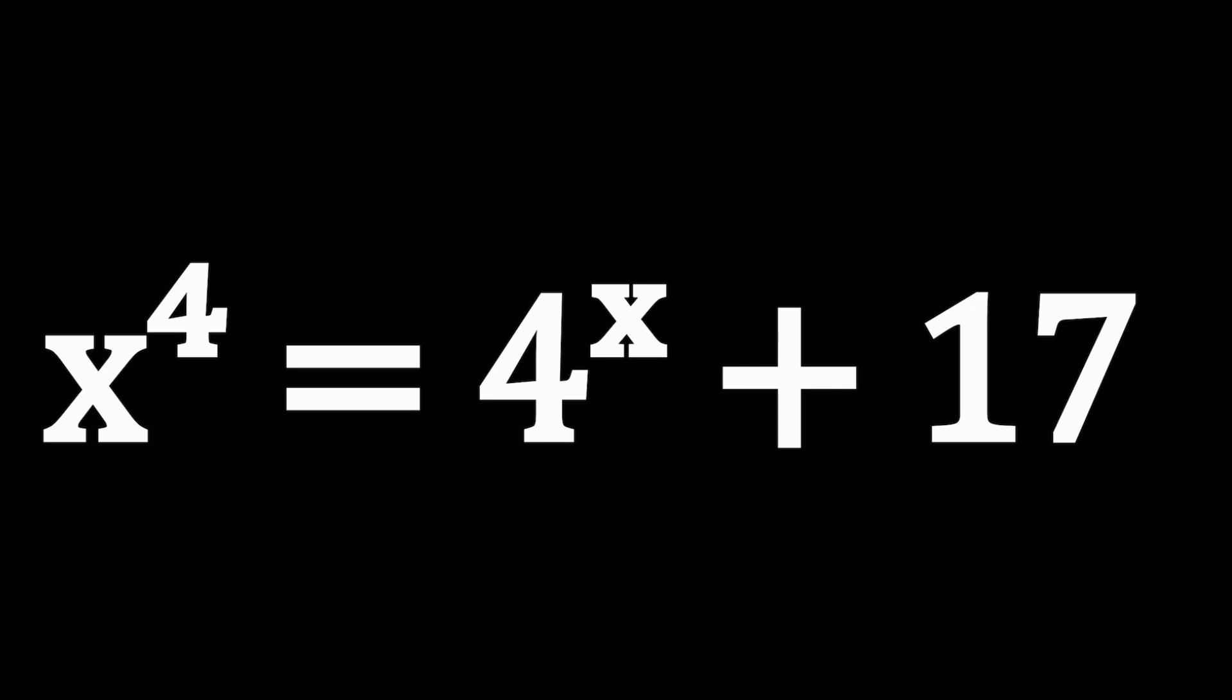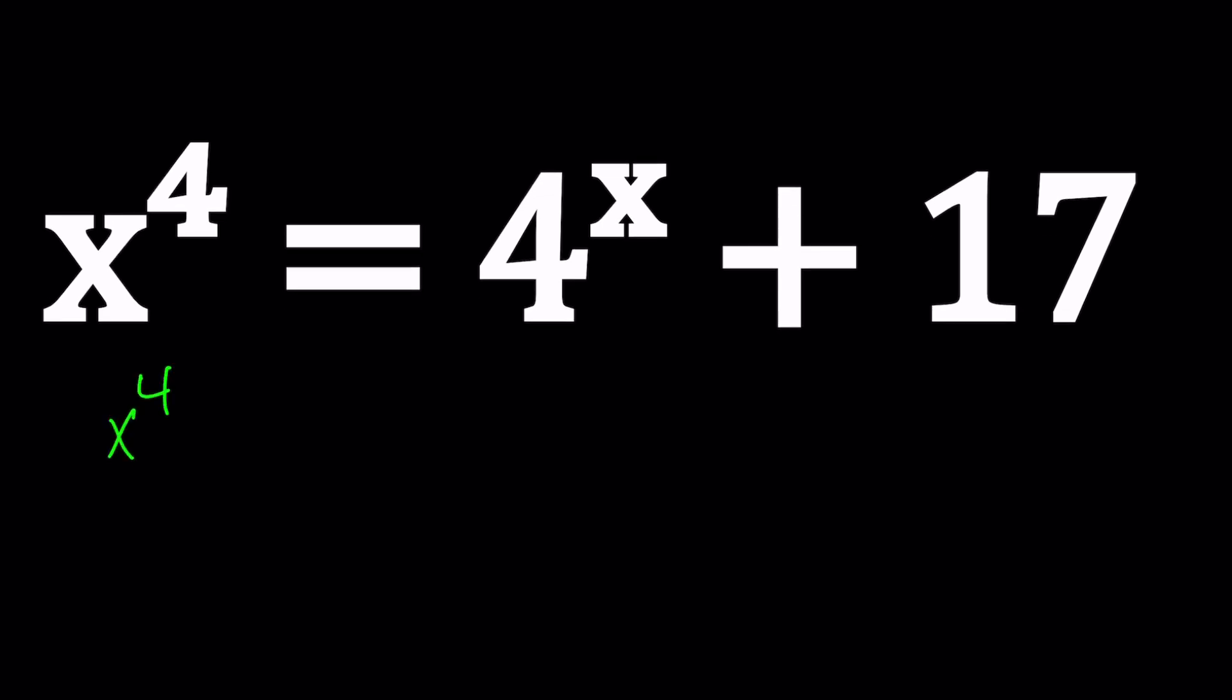Let's start by putting the variables or the x's on the same side. Let's subtract four to the power x from both sides. And then we're going to consider the following. Because x to the fourth is an even power, we can write it as x squared to the second power. And four is two squared, so we can write it as two to the second to the power x. And that is equal to 17.